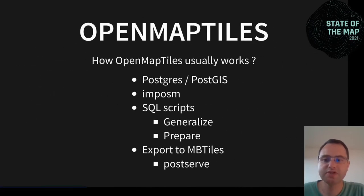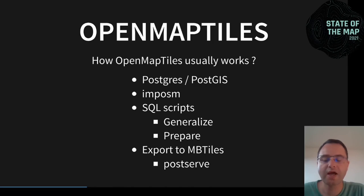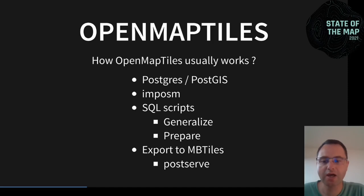For this, there is the OpenMapTiles project. OpenMapTiles is based on Postgres and PostGIS, loaded by imposm. After the imposm import, OpenMapTiles runs a set of SQL scripts to prepare and generalize the data — for example, to merge features and improve label localization when displayed. OpenMapTiles then exports to MBTiles using PostGIS, which reads from the database and exposes MapBox Vector Tiles on HTTP.